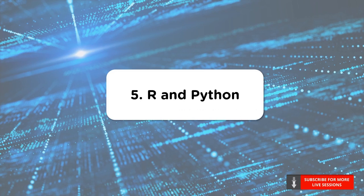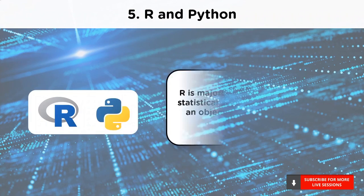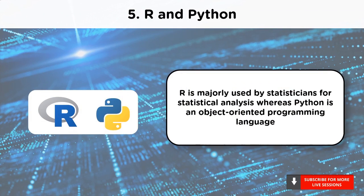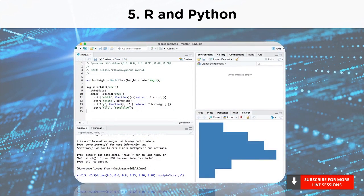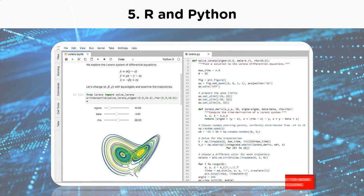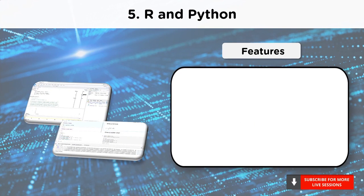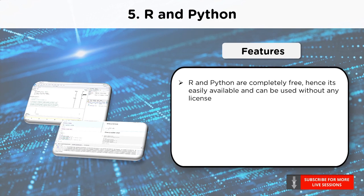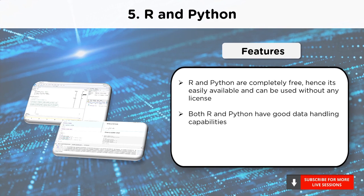At number 5, we have both R and Python. R is a programming language which is used for analysis as well and has traditionally been used in academics and research. Python is a high-level programming language which has a Python data analysis library. It is used for everything starting from importing data from Excel spreadsheets to processing them for analysis. Both R and Python are completely free and can be used without any license. Both R and Python have options for parallel computations and good data handling capabilities. As both R and Python are open in nature, all the latest features are available without any delay.